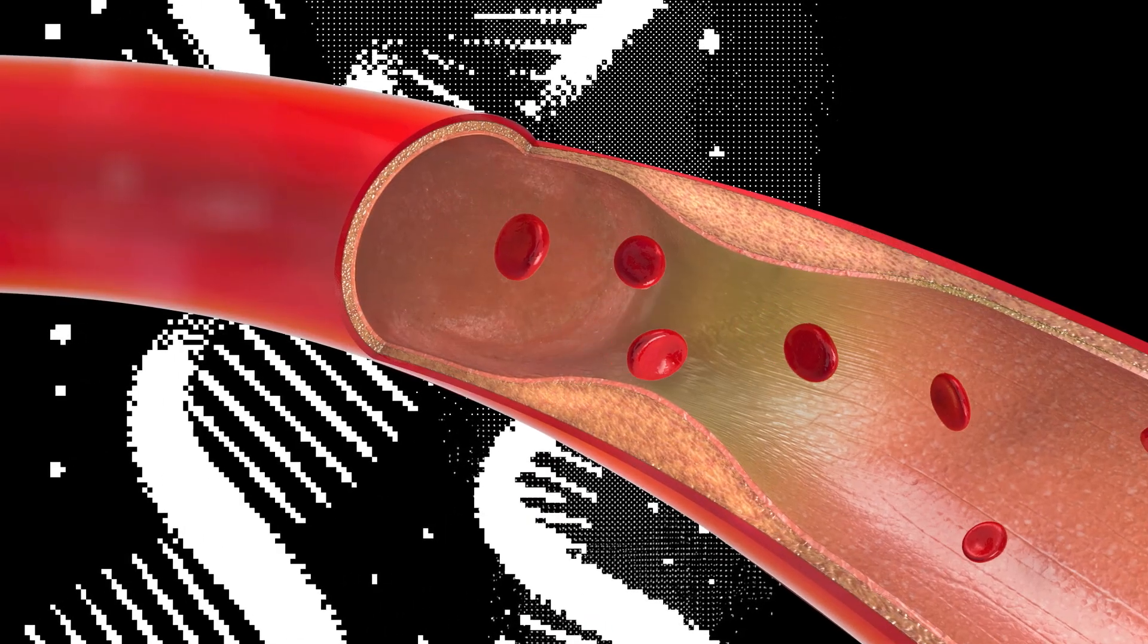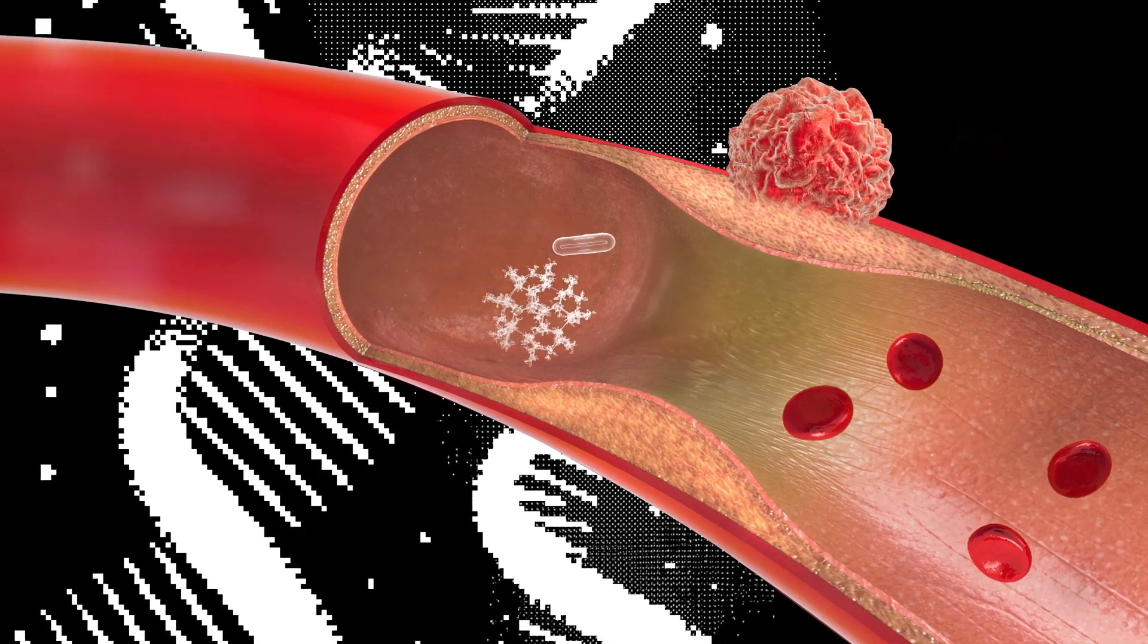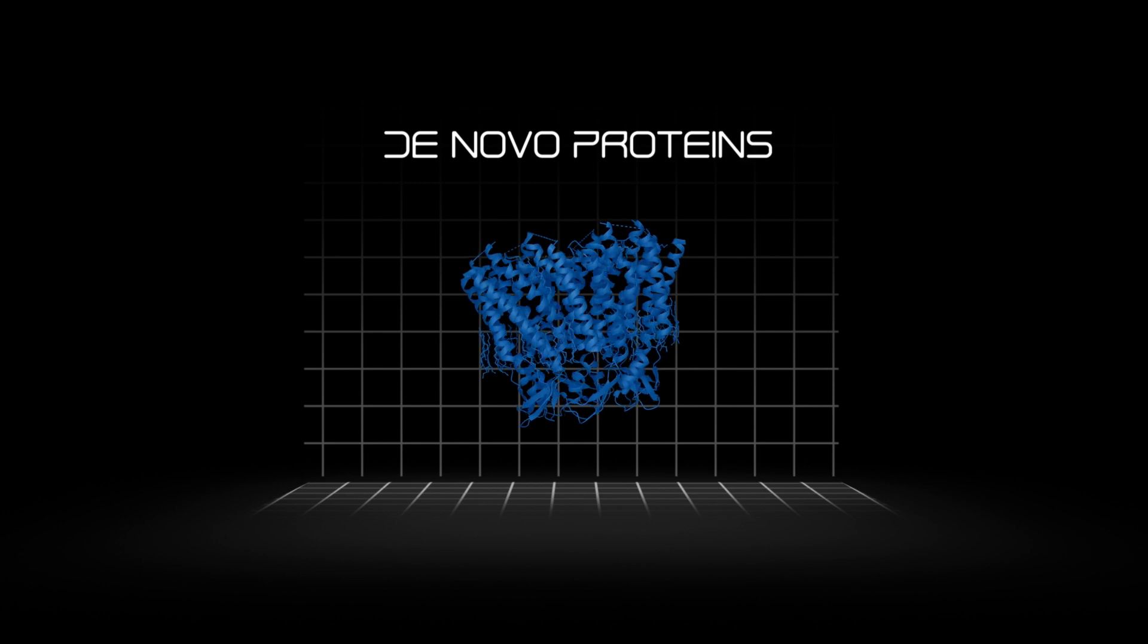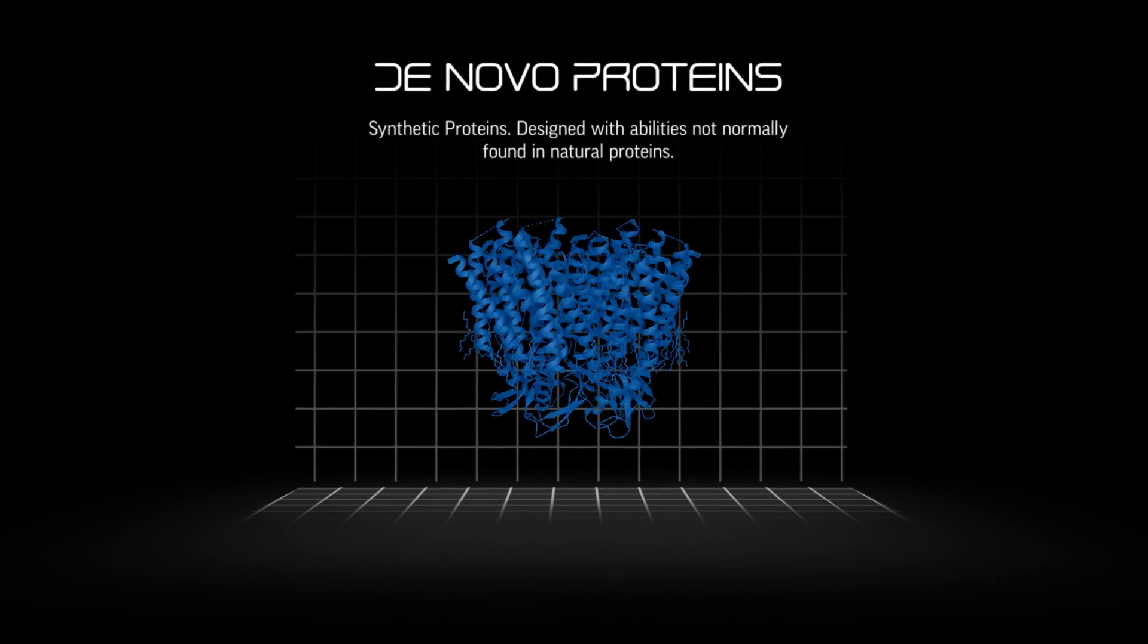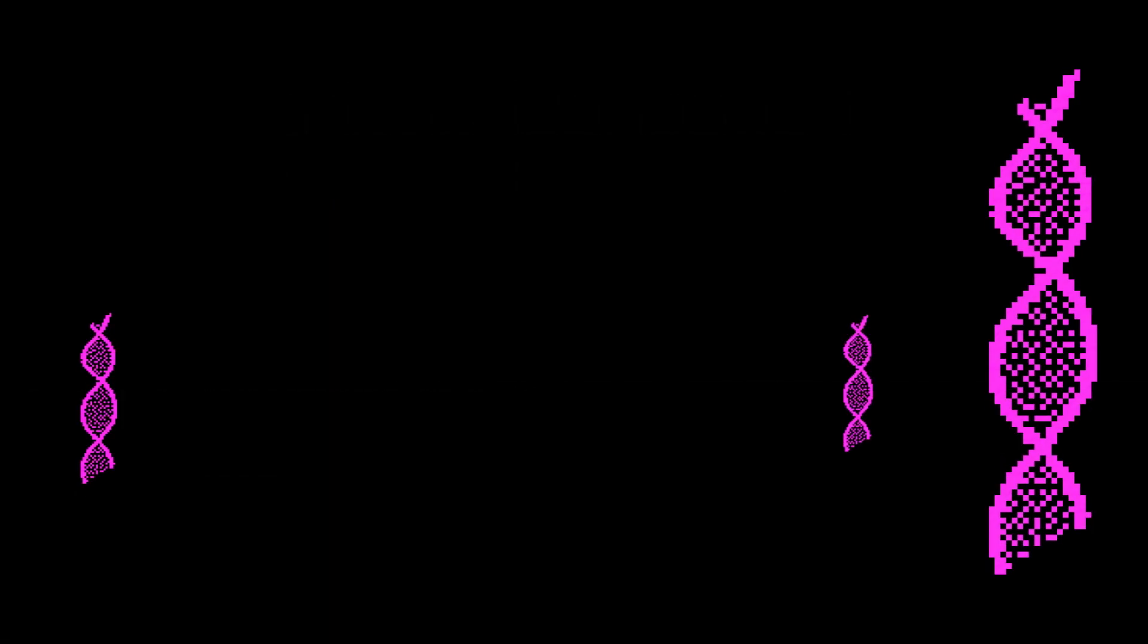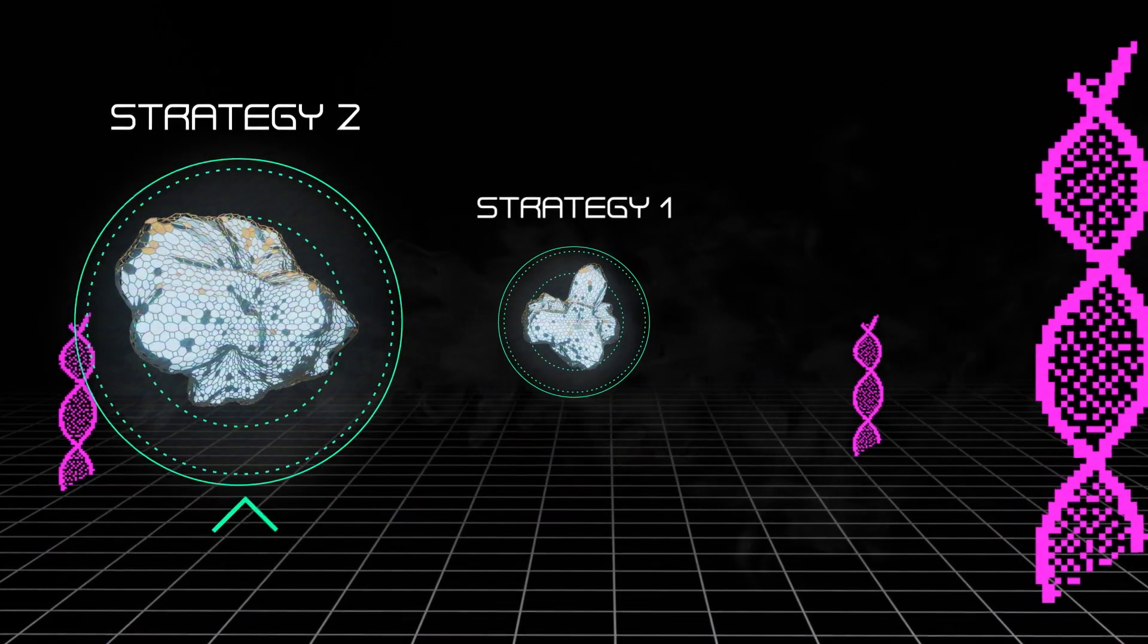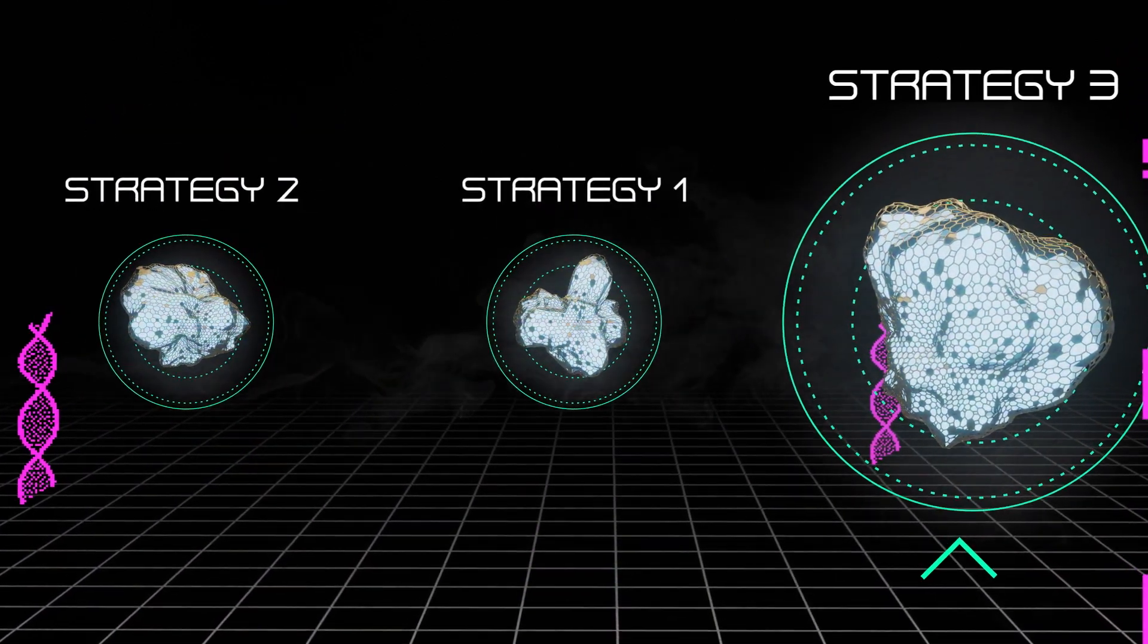But with custom-designed proteins, we could deliver chemotherapy directly to the cancer tumor, avoiding the hardship that every chemotherapy patient currently has to go through. Another frustrating thing about cancer is treatment that works for one person may not work for another. But now, de novo protein design could change the game. De novo proteins are synthetic proteins designed with abilities not normally found in natural proteins. They're easy to manufacture, have new functions, and are tunable to specific cases. This means that we could create custom drugs or strategies for different kinds of patients, possibly creating much higher success rates for treatments of serious diseases like cancer.